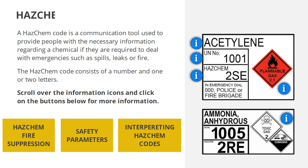A HASChem code is a communication tool used to provide people with the necessary information regarding a chemical if they are required to deal with emergencies, such as spills, leaks, or fire. The HASChem code consists of a number and one or two letters.